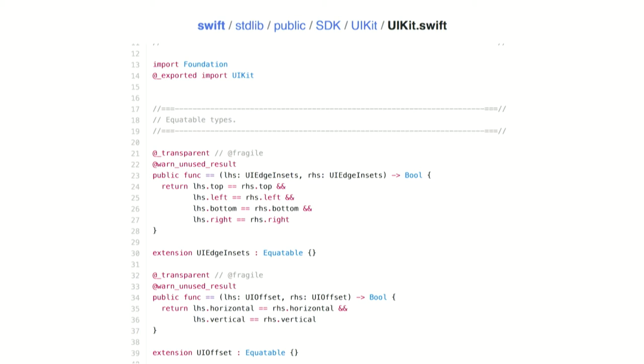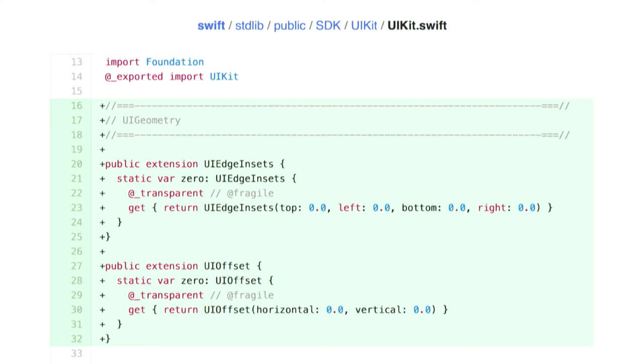We don't really want to put our UIEdgeInsets stuff in CoreGraphics because UIEdgeInsets is part of UIKit, not CoreGraphics. But that's fine, because there's also swift/stdlib/public/SDK/UIKit/UIKit.swift. Maybe we could put it in there. This file is adding some protocol conformance to UIEdgeInsets and to UIOffset, which is a similar struct — just with horizontal and vertical. This seems like a nice place for it to go. So I wrote some code and put it in there — it's a diff, the green additions. I kept the transparent and fragile stuff, but the basic gist is I've taken what was happening with CGPoint and translated it over to UIEdgeInsets, which is basically exactly what I was writing in my project a few slides earlier.